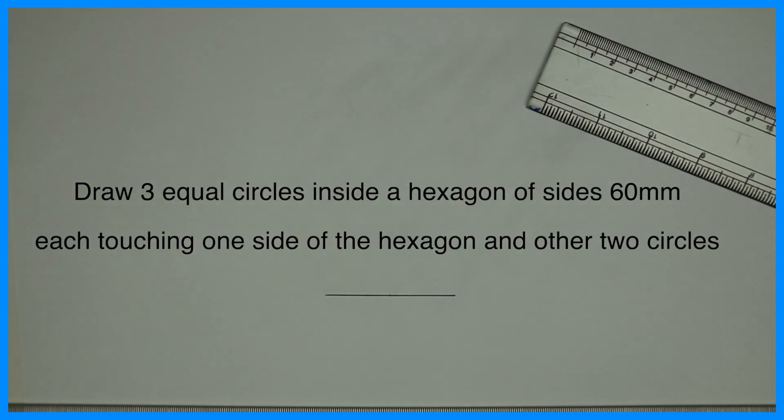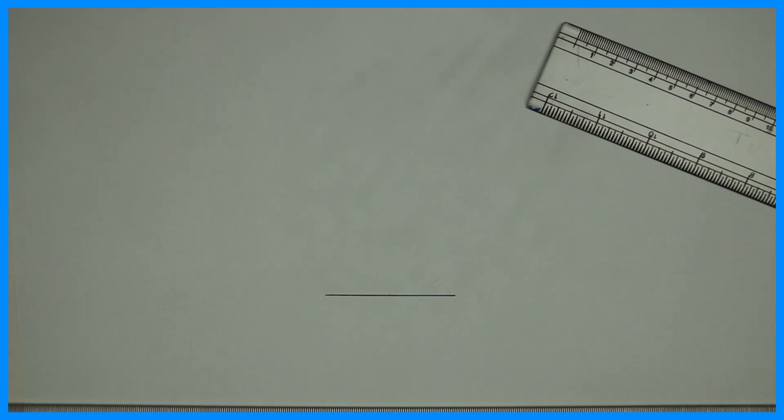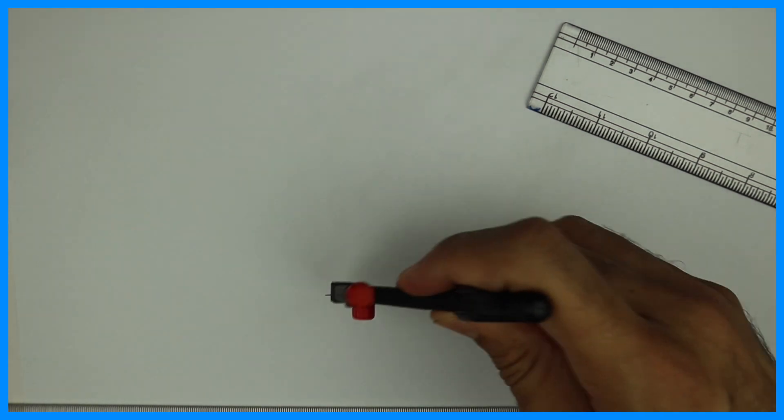Welcome to Technical Drawing. Today we are going to draw three equal circles inside a hexagon of side 60mm, each touching one side of the hexagon and the other two circles. First, we will draw a line of 60mm.